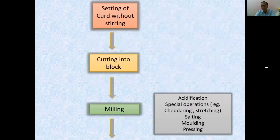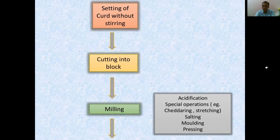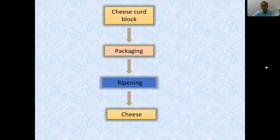The curd is set without stirring, then cut into blocks, and milling is performed. Special operations during this stage include cheddaring, stretching, salting, molding, and pressing. The cheese curd block is then formed, packaged, and left for ripening. After ripening, the final cheese product is ready.